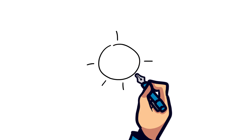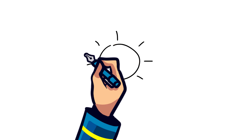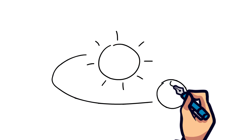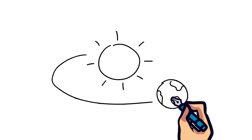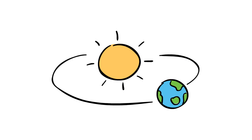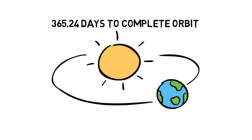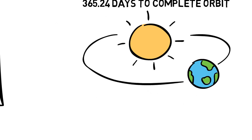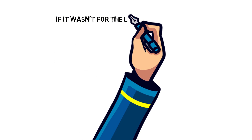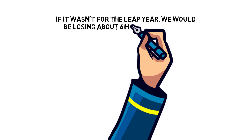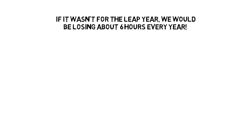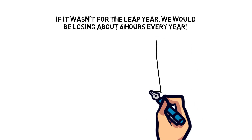But why exactly do we have leap years? To answer that we can just look up at the sky. A year is how long it takes for the Earth to revolve around the sun — approximately 365.24 days to complete one orbit. Unfortunately we can't have part of a day, so to account for this extra time the leap year was created.